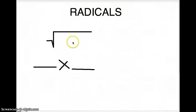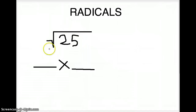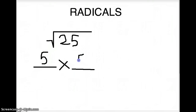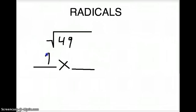Say we have the square root of 25. We have to find two numbers that are the same that will equal that number — 25. The only ones that are the same are 5 and 5, so the square root of 25 is 5. Similarly, the square root of 49 is going to be 7. That's basically the idea of a square root.